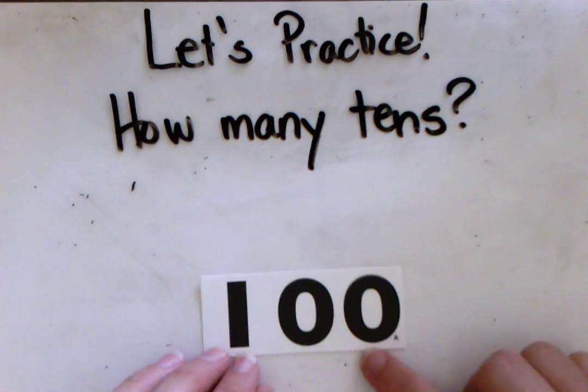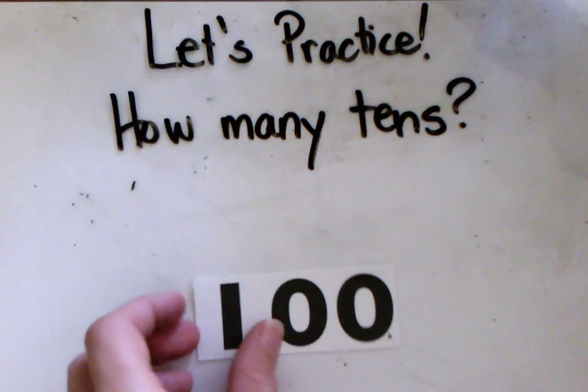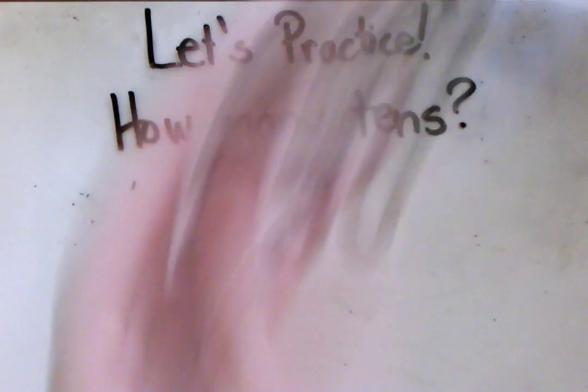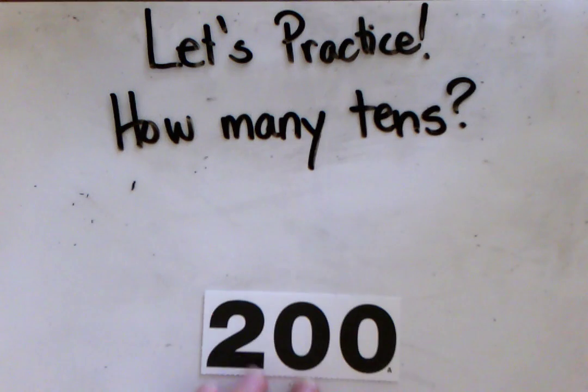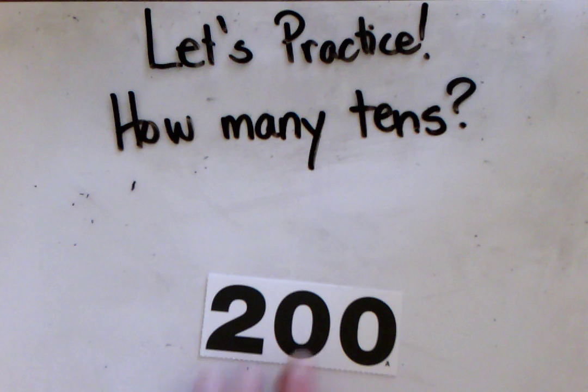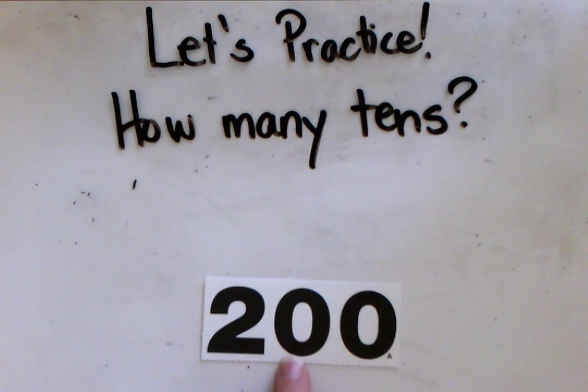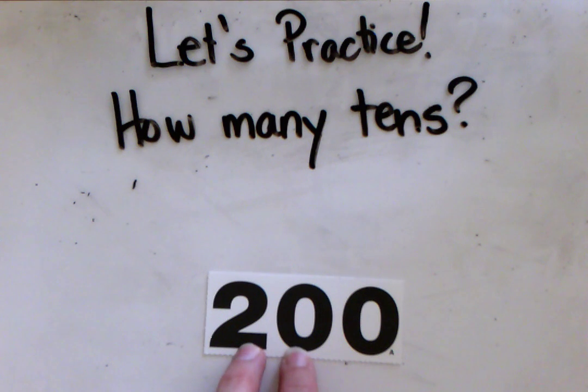How many tens? Ten tens. How many tens? There's two hundreds. So if one hundred has ten tens, two hundred, there's two sets, so that's twenty tens.